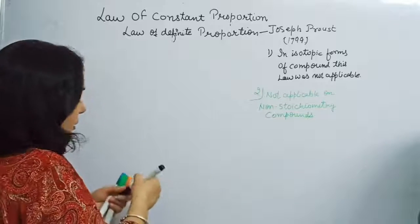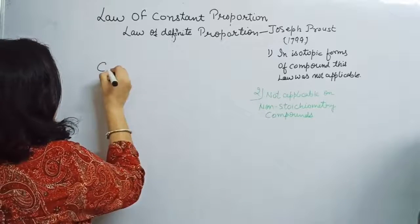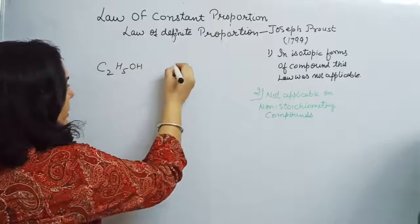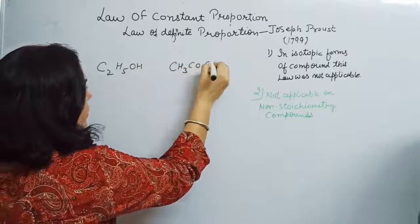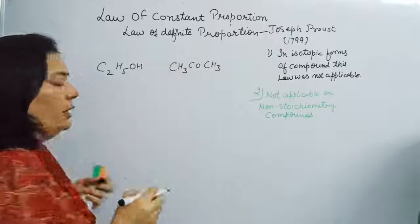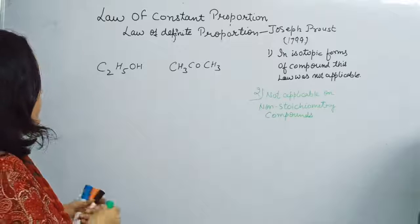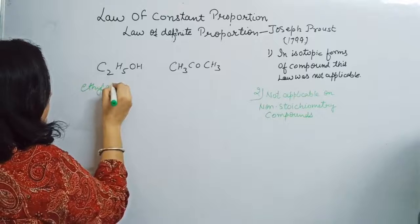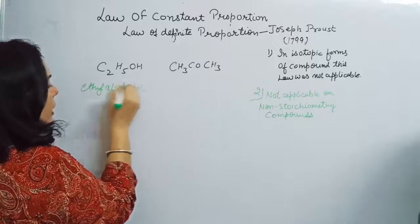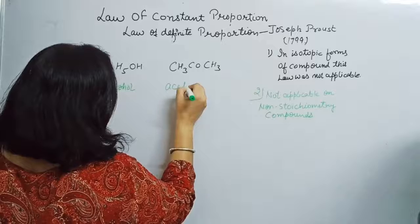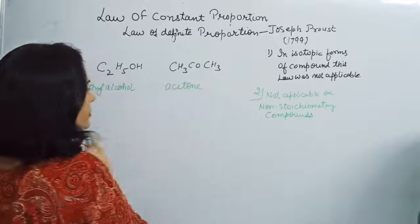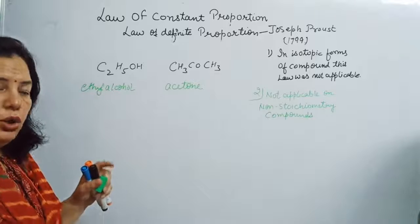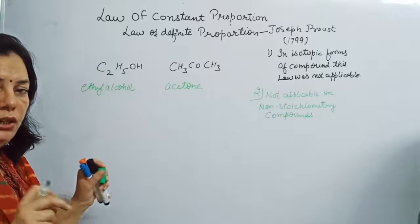For example, C2H5OH (ethyl alcohol) and CH3COCH3 (acetone) are two different compounds with totally different properties. Let us calculate the ratio of carbon, hydrogen, and oxygen in each of them.